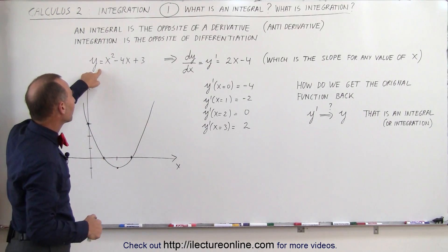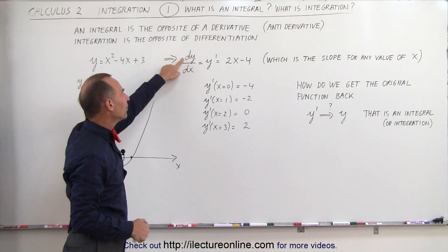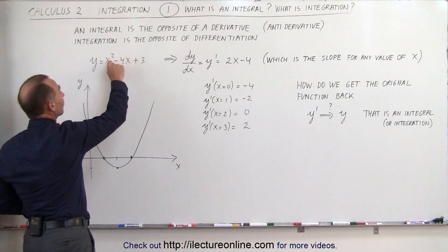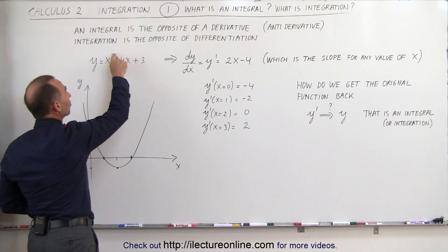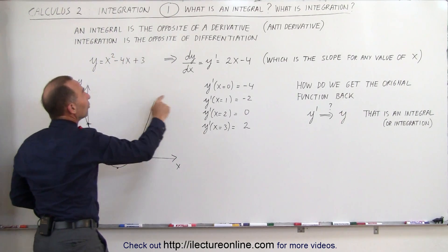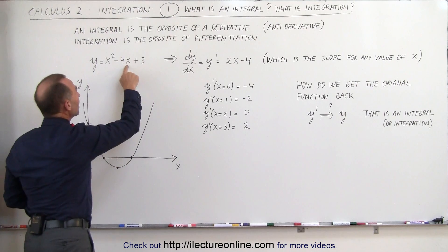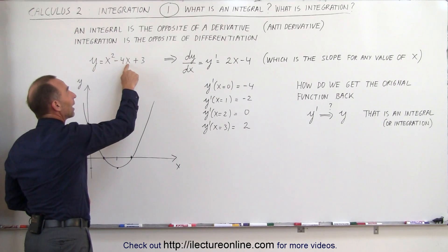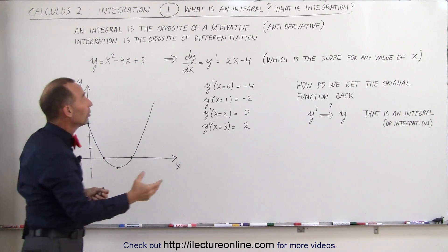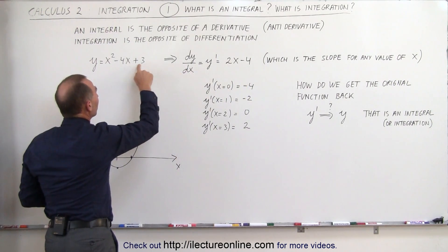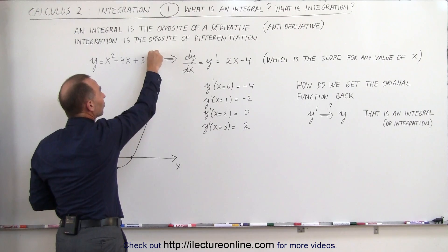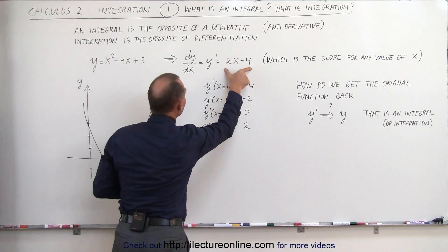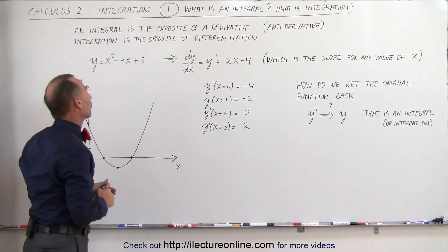If we now take the derivative of that function — we call that dy/dx, the derivative of y with respect to x, also called y prime — the way we do that is we take the exponent from the x variable, place it in front, and subtract 1 from the exponent. So 2 minus 1 is 1, and we get 2x to the first power. For the next term, we take the exponent, multiply times minus 4, giving us minus 4 times 1 times x to the 0 power. Anything to the 0 power is 1, so we simply get minus 4. The derivative of the constant: since it's x to the 0 power, we put 0 in front, and 0 times anything is 0, so the constant just disappears. This is the derivative of the original function y equals x squared minus 4x plus 3.